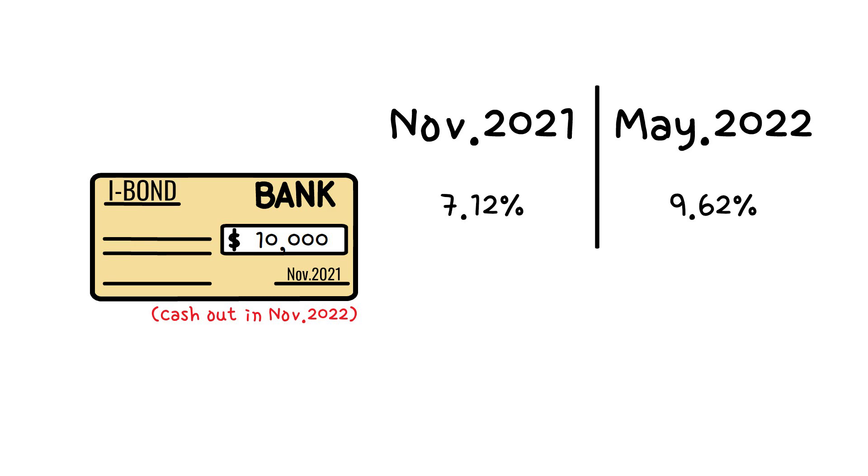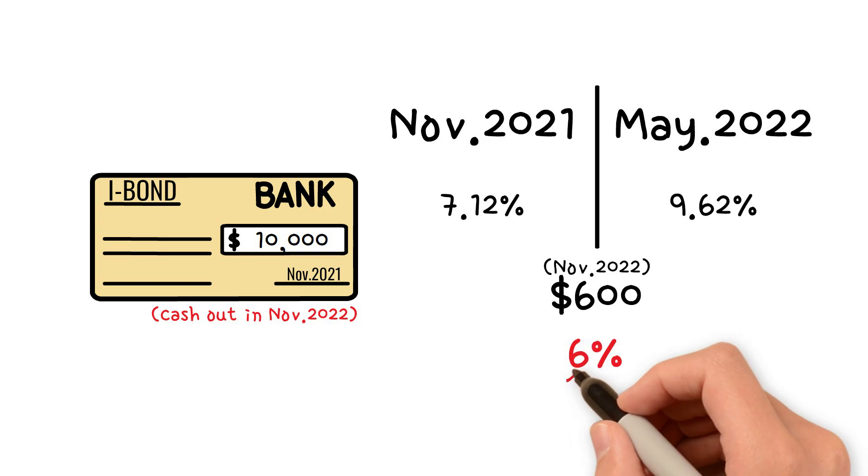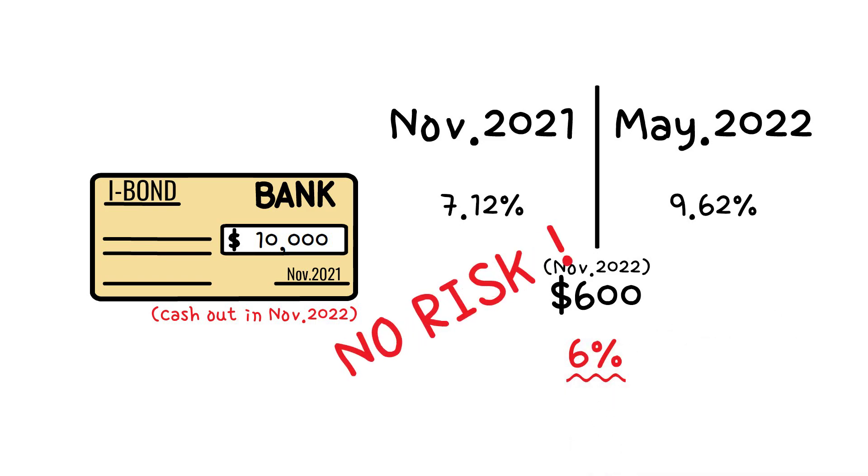If you cash out as soon as November arrives, you will receive 9 months interest in principal, excluding August, September, and October interest. The interest is about $600. Even if you don't get 3 months worth of interest, a 6% interest rate on risk-free assets is incredible, isn't it?